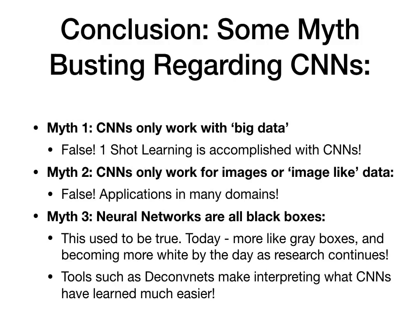The second myth is that convolutional neural networks only work for images. 1D convolutional neural networks are often applied to time series data — this can include speech, but also extends to things like text or even predictive diagnosis using electronic health records. Even in the 2D case, voice and speech tasks have been solved successfully using convolutional neural networks. There are actually a wide variety of domains in which convolutional neural networks are appropriate.